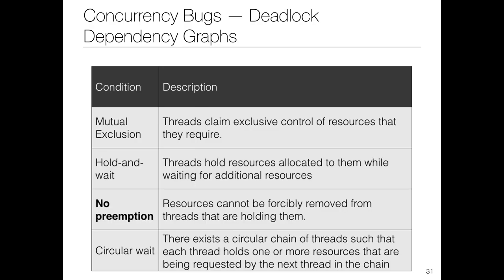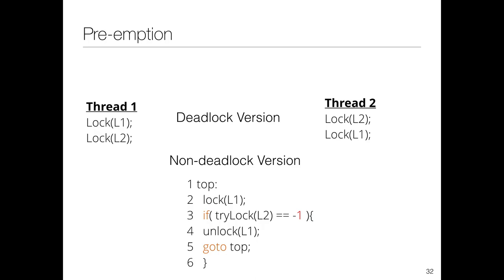For no-preemption: allow preemption using a trylock approach. Acquire L1, then try to acquire L2. If you can't acquire L2, also give up L1. This prevents the hold-and-wait situation by releasing held resources when a needed resource is unavailable.